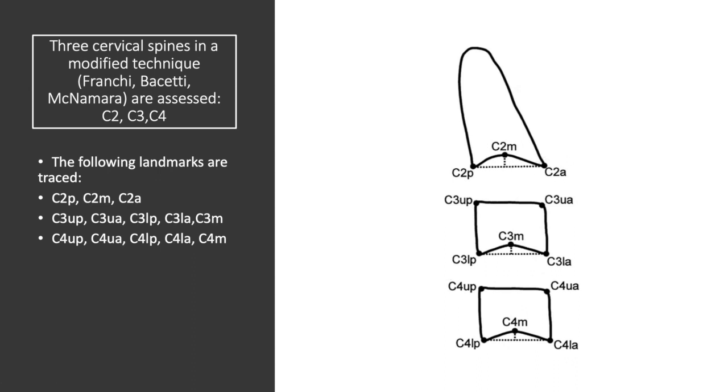On the surface of the third cervical spine, we are looking at the following landmarks. On the superior surface, there are two points: C3 upper posterior and C3 upper anterior. The inferior surface has points or landmarks similar to those on the inferior surface of the second cervical spine. These are C3 lower posterior, C3 median, and C3 lower anterior.